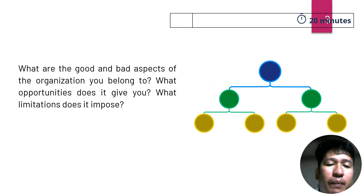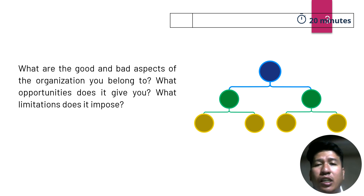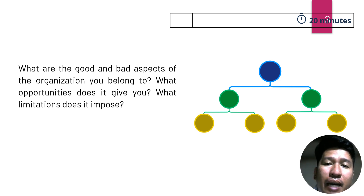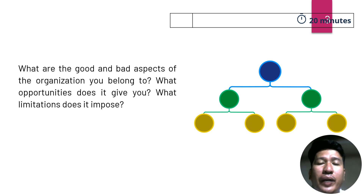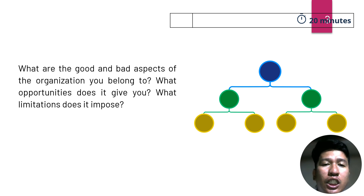What are the good and bad aspects of the organization you belong to? What are the opportunities it gives you, and what limitations does it impose? We will evaluate the club or organization you belong to by identifying its good and bad aspects, covering its rules and regulations, rewards and punishment systems, and the leader's responsibility and performance.